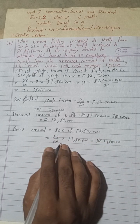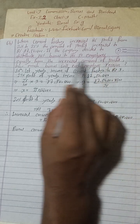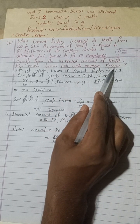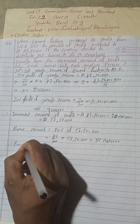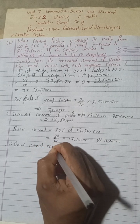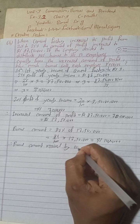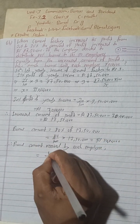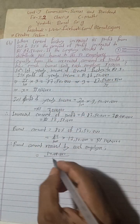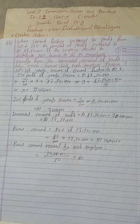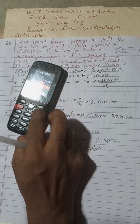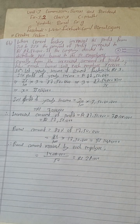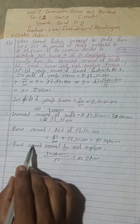This bonus amount is equally distributed to 50 employees. We need to find how much bonus each employee receives. Therefore, bonus amount received by each employee equals total bonus amount divided by 50 employees, which is Rs. 14 lakh ÷ 50 = Rs. 28,000. So each employee receives a bonus of Rs. 28,000.